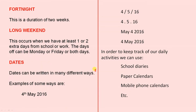Dates can be written in many different ways. Some examples are: 4th of May 2016; you can write it with slashes; you can write it with dots; you can write May 4, 2016; or you can write 4 May 2016. No doubt there are a few other ways, but those are the most popular.